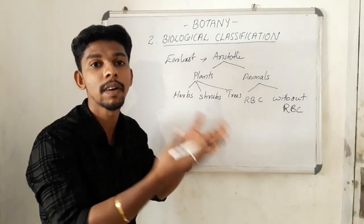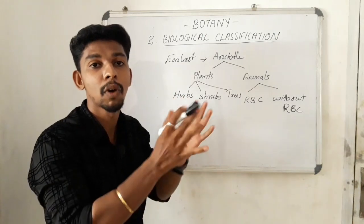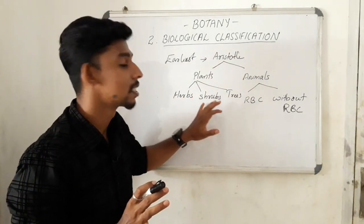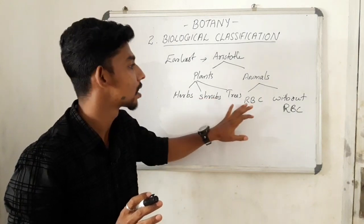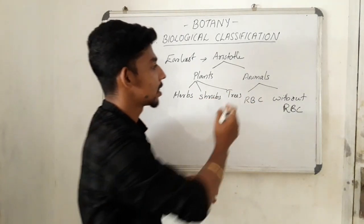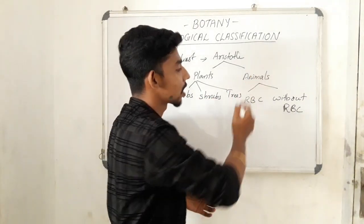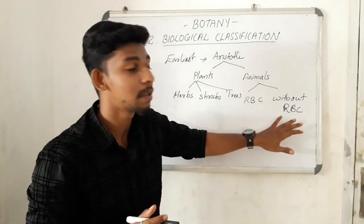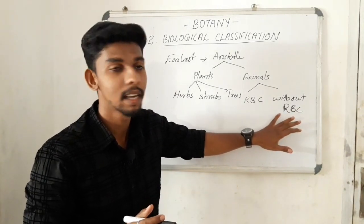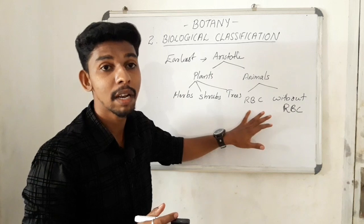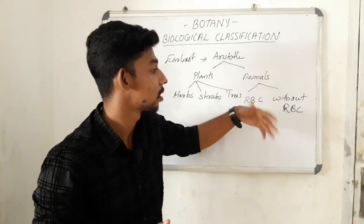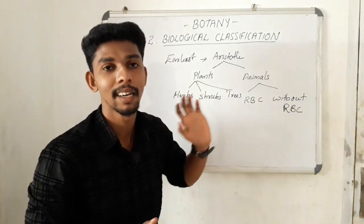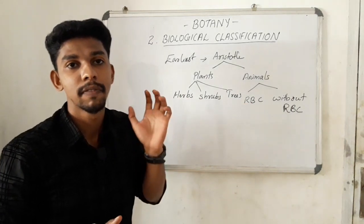Morphological characters are observable, visible characters. The plant categories are herbs, shrubs, and trees. For animals, the criteria were those who have red blood cells and those who do not have RBC — classified into two groups.